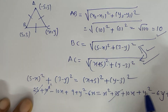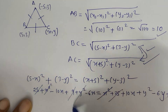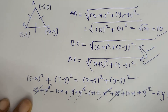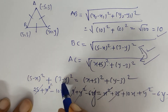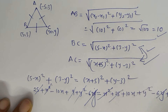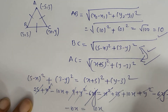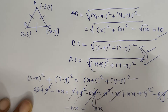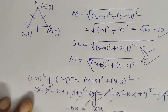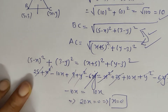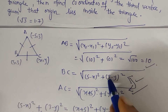After expanding, 25 and 25 cancel, x squared cancels, 9 and 9 cancel, y squared cancels, and the minus 10x and plus 10x terms simplify. We are left with minus 10x equals 10x, which implies 20x equals 0, so x equals 0.